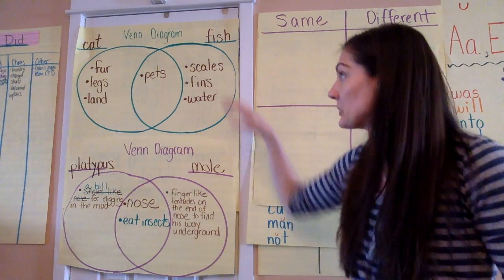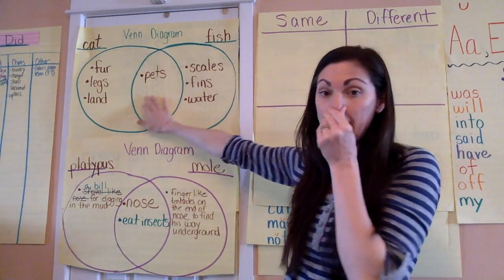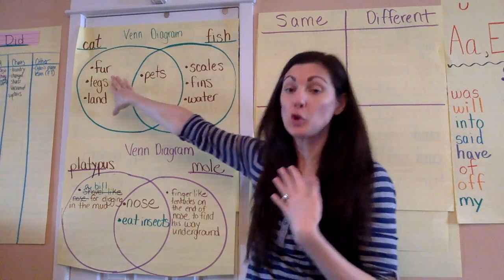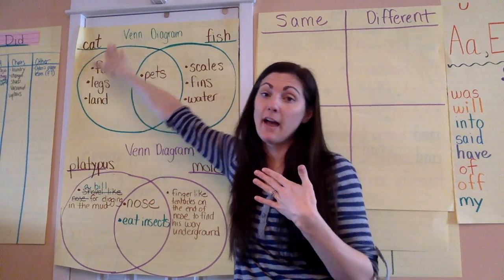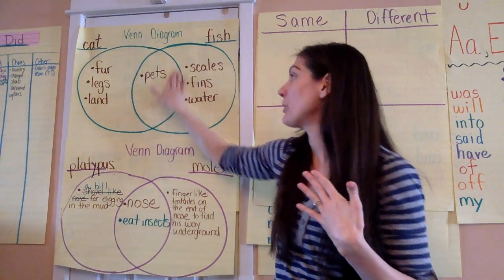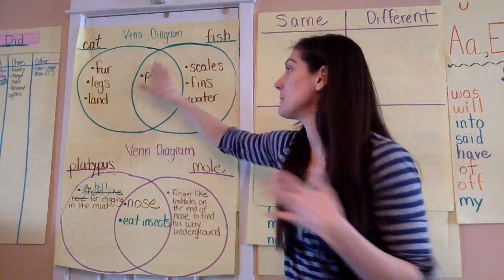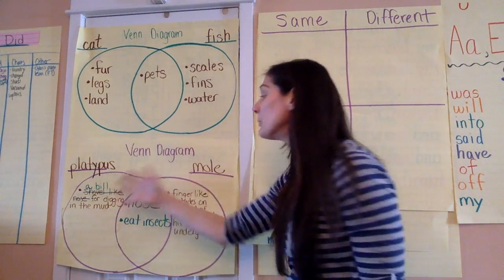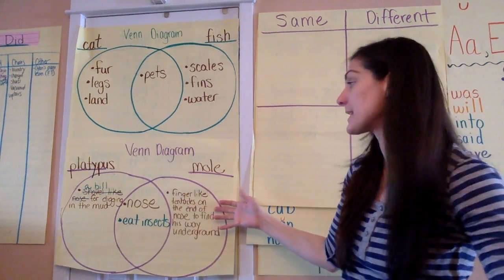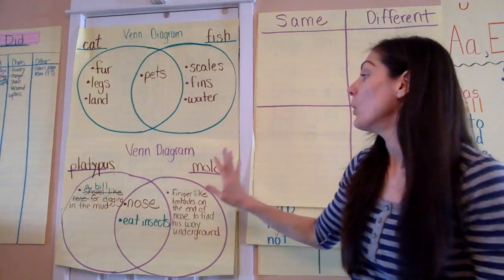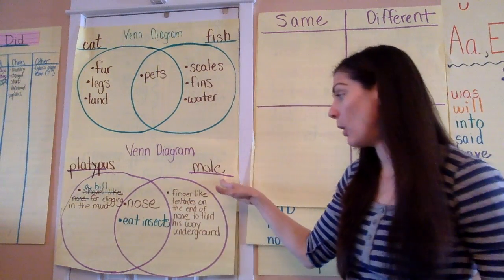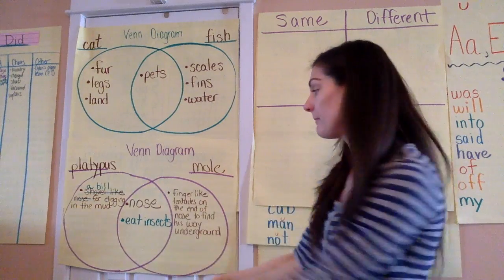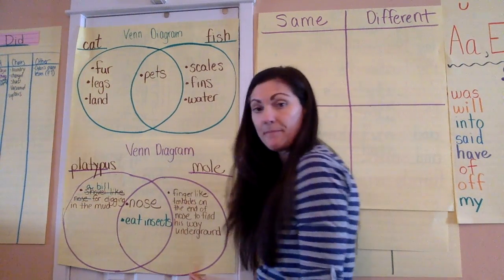Yesterday we used a Venn diagram. For the 'I do' part, I compared the two pets that I have — my cat to my fish — and I put similarities in the middle and differences on the outside. And then when we read the shared reading text, we compared a platypus and a mole. So we put their similarities again in the center and their differences on the outside.